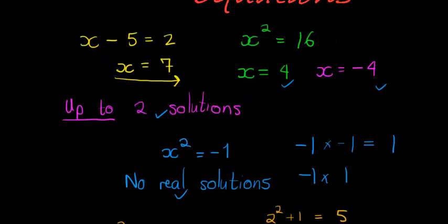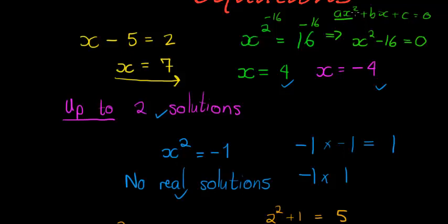This one could have been written in terms of AX squared plus BX plus C equal to 0 by just subtracting the 16 on both sides. And then I see I get X squared minus 16 is equal to 0. And here you can see that we've got the AX squared term, the BX term is 0, and the C is negative 16.